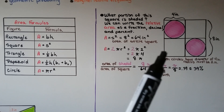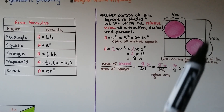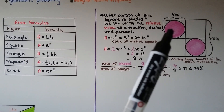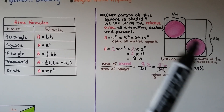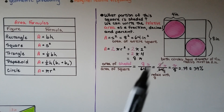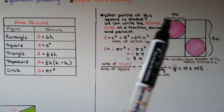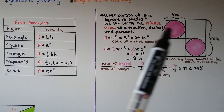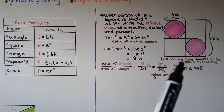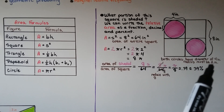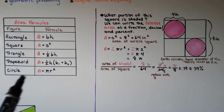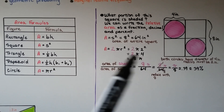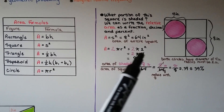Now looking at this diagram, we have a square whose sides are 8 inches and there are two shaded pink circles inside it. This measurement is 4 inches, which means the diameter is 4 inches for each circle. If the diameter is 4 inches, the radius must be 2 inches. We use the area formula for a circle, pi r squared, to find the area of these circles.